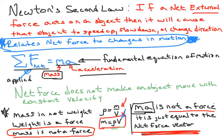When you multiply mass times acceleration together, it's going to have a direction and a magnitude equal to the direction and magnitude of that net force. But mass times acceleration is not a force — only things like tension and friction are forces.